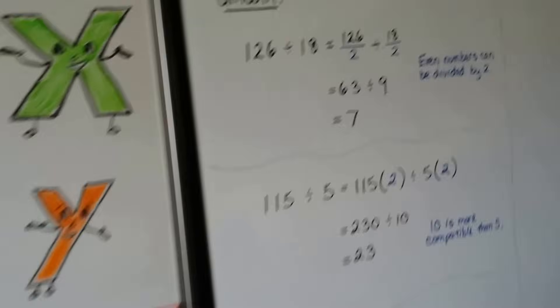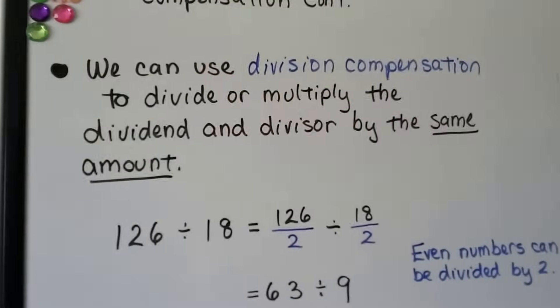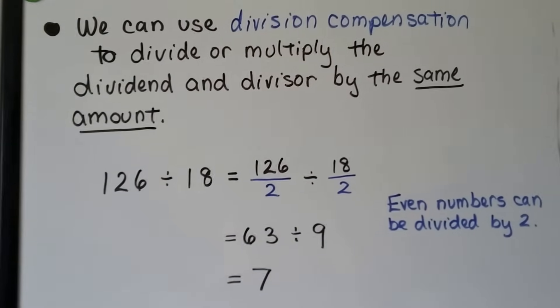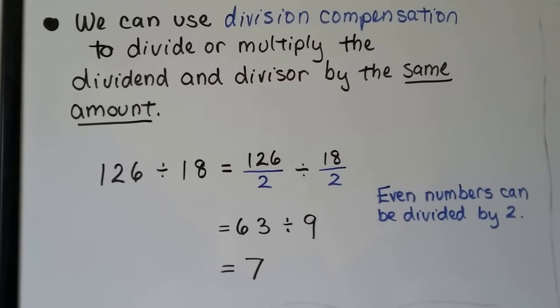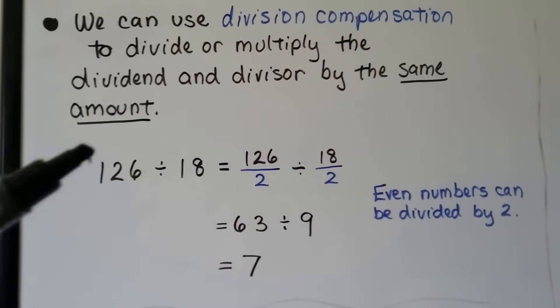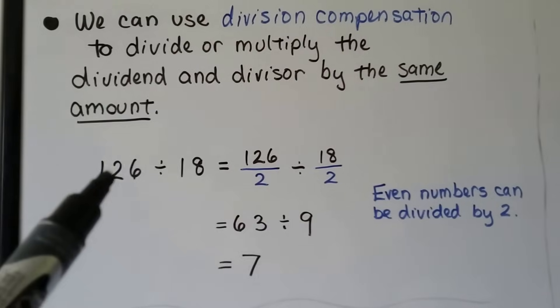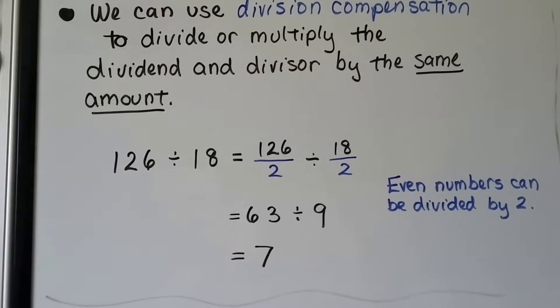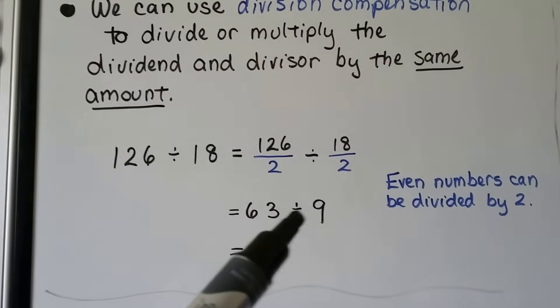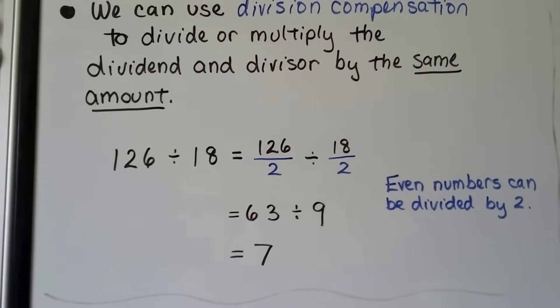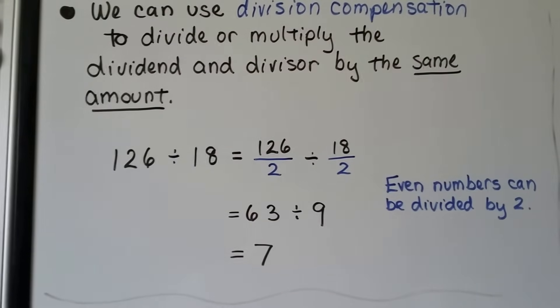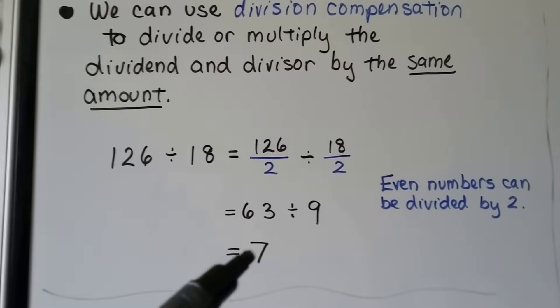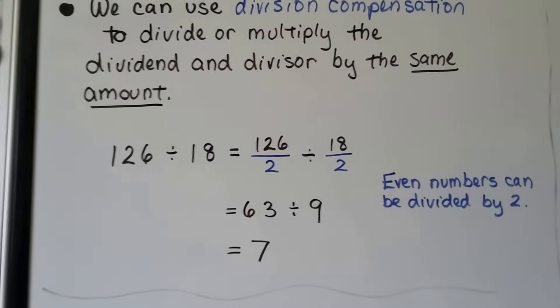What about division? We can use division compensation to divide or multiply the dividend and divisor by the same amount. If we have 126 divided by 18, even numbers are the best. We can divide this by 2 and divide this by 2 and make it a simpler problem because then we'll have 63 divided by 9. We've now turned it into an easier, simpler problem. If you know your times table, you know 9 times 7 is 63. So, 63 divided by 9 is 7.